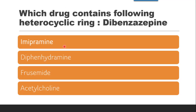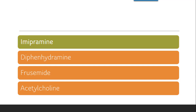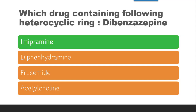Next question: Which of the following drugs contains the heterocyclic ring called dibenzazepine — imipramine, diphenhydramine, frusemide, or acetylcholine? The correct answer is imipramine, as we just saw in its structure it contains two benzene rings and a central azepine ring.